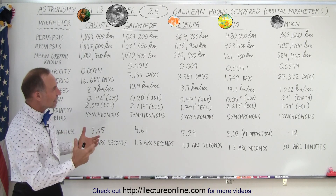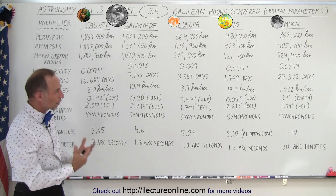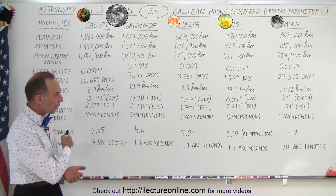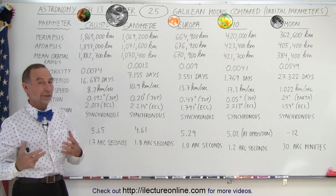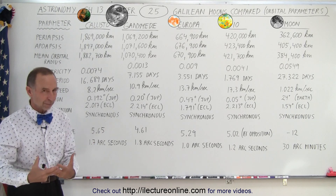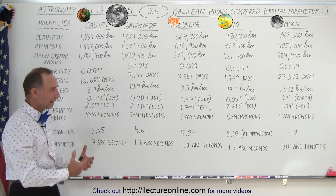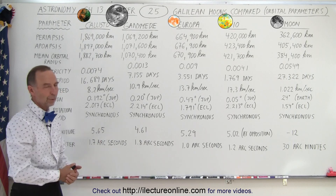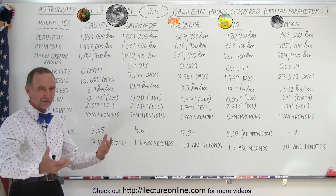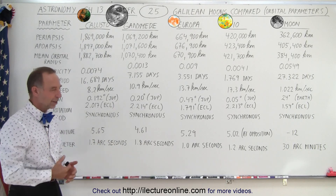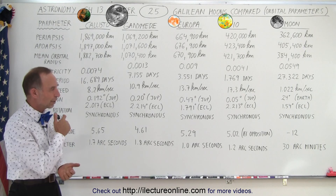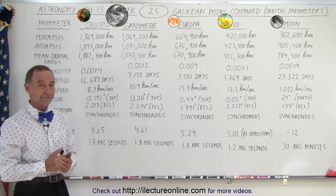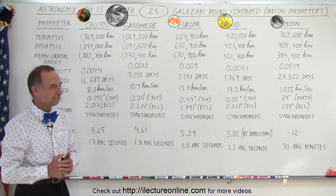So that gives you a good idea of the orbital parameters relative to our moon. Next we're going to take a look at the physical parameters, again relative to our moon, because that gives a useful frame of reference. Let's do that next, coming up.